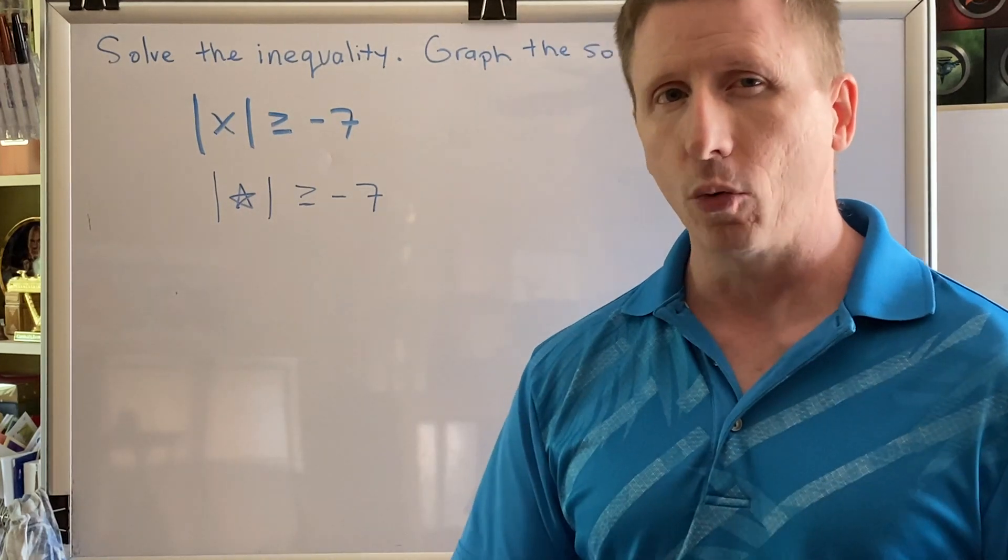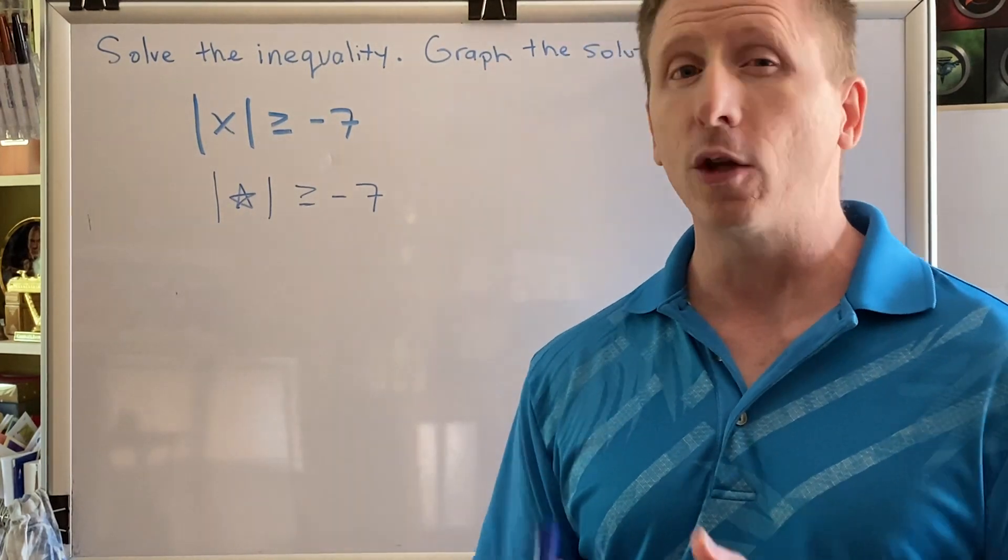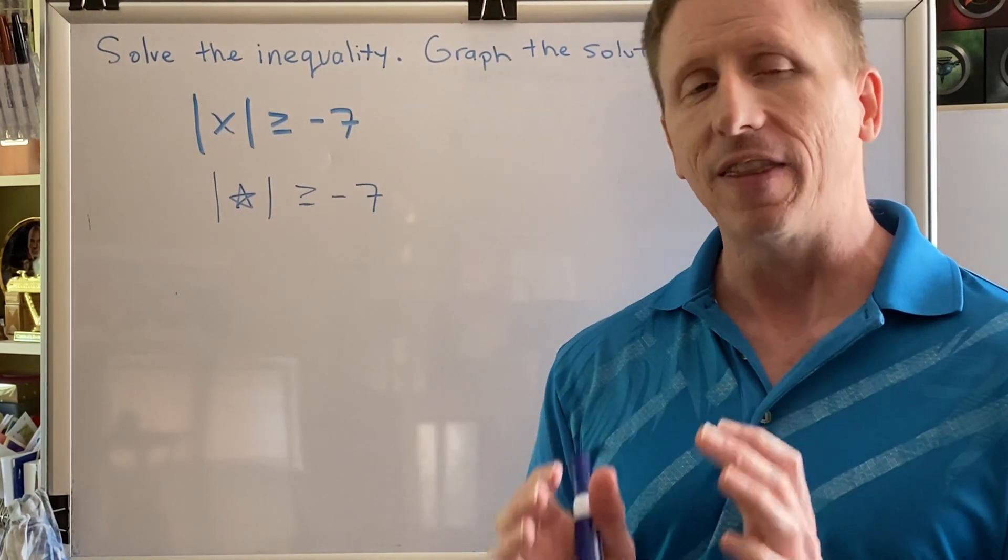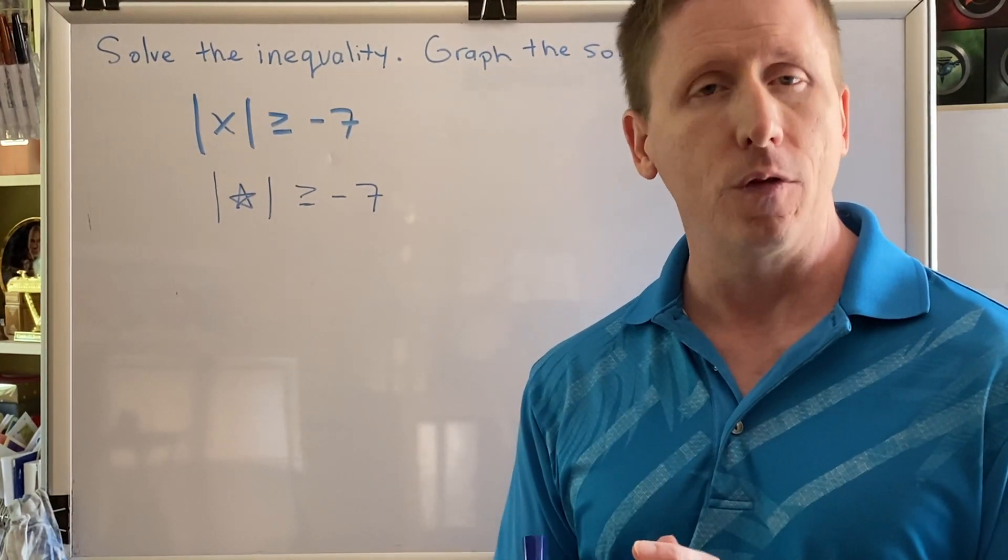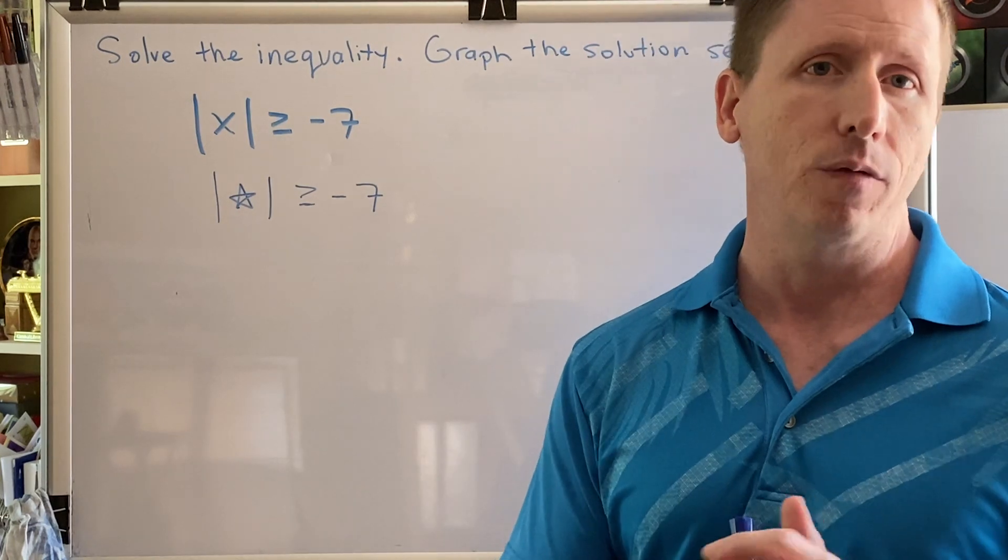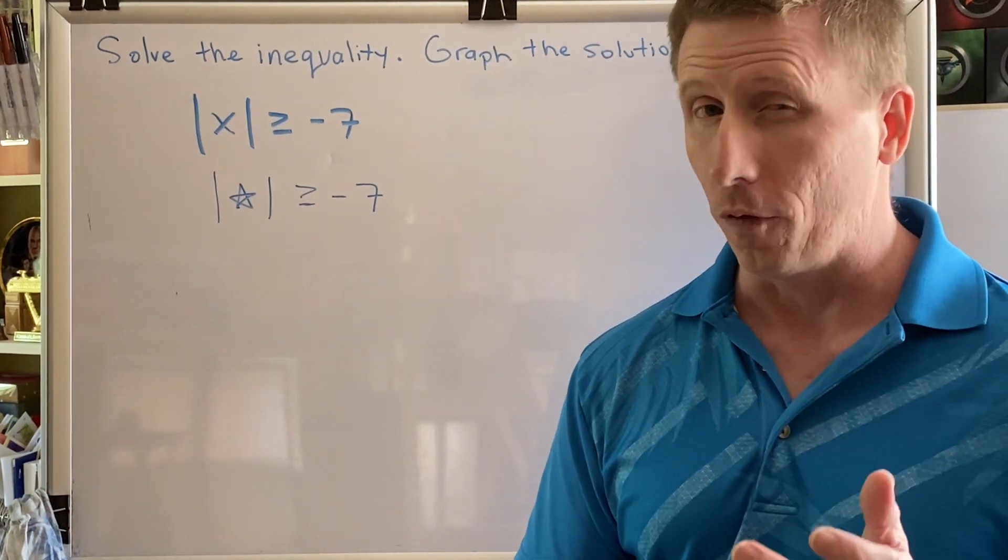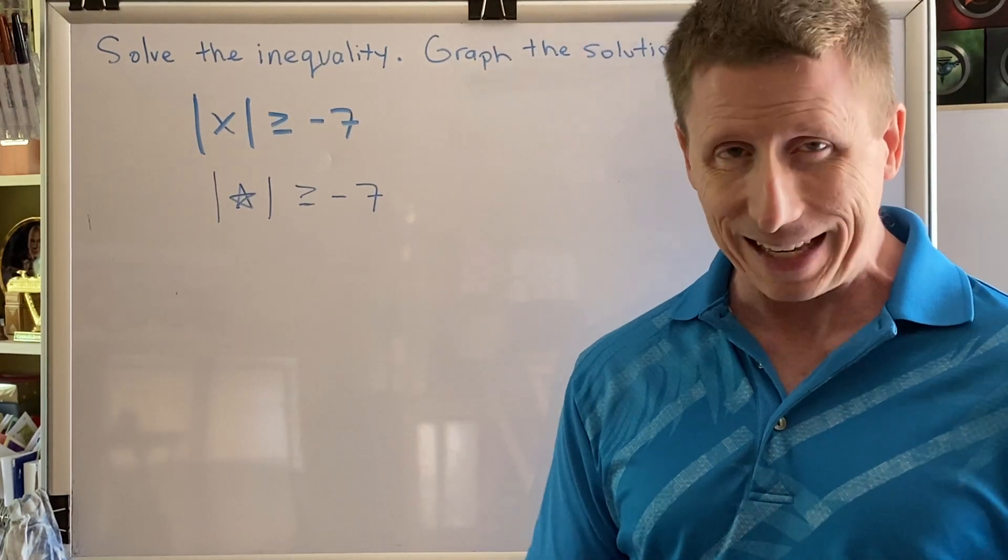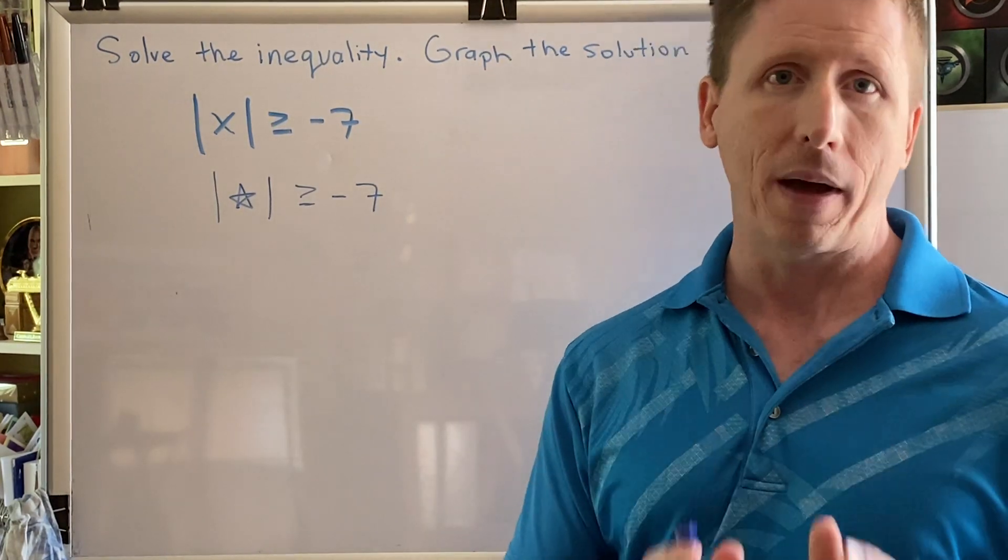Remember how absolute value works. When you take the absolute value of a negative, you get the positive version of that number. When you take the absolute value of zero or a positive, you get the same zero or positive as your result. Therefore, when you take the absolute value of something, the only kind of number you can get as a result is zero or positive.